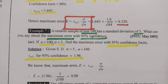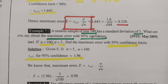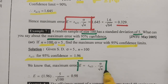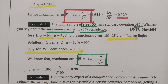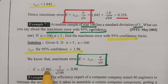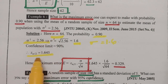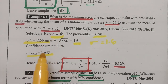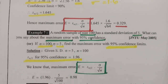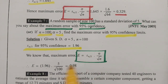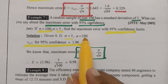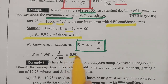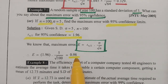For maximum error, the formula is E equal to Z alpha by 2 · sigma / root n. For 95%, Z alpha by 2 is 1.96, and for 90%, Z alpha by 2 is 1.645 — if you remember these two values, it is easy to solve. Substituting: Z alpha by 2 is 1.96, sigma value is 5, and root over 100. The value here is 0.98. So this is the maximum error.